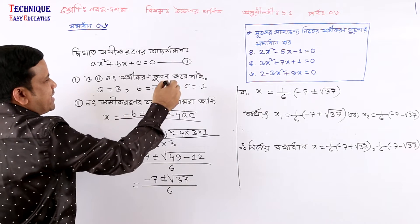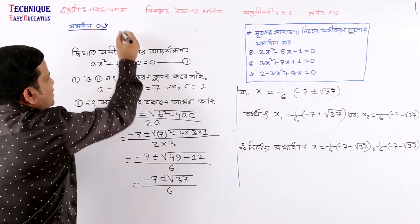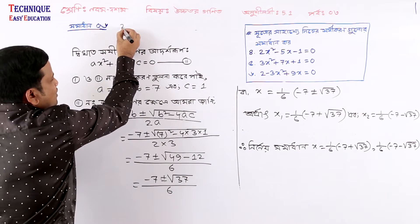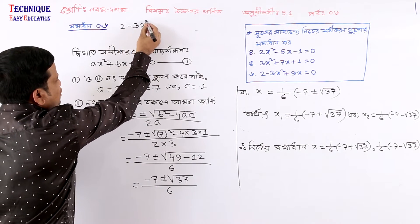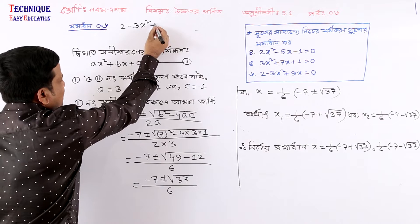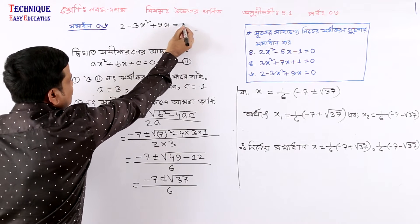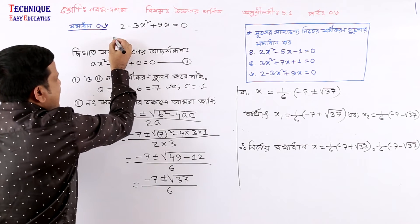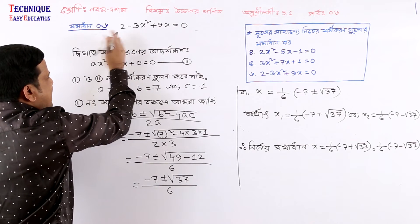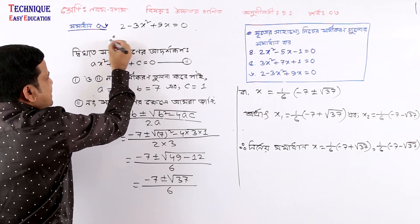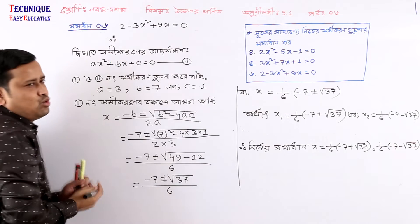x1 is minus 7 plus root 37. This is the answer. Now we have the next equation number 2: minus 3x squared plus 9x equal to 0.